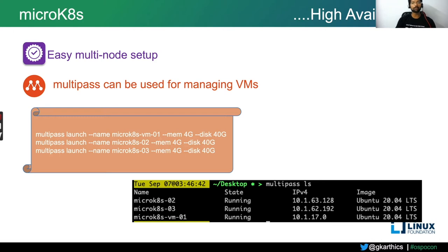How do we create a highly available MicroK8s Kubernetes cluster? For high availability, as we discussed, we need multiple machines or nodes. Since we are running on a single development machine — a laptop or desktop — we need to create multiple virtual machines. You can use any tools to manage or create virtual machines, like VirtualBox, Multipass, or Vagrant. I use Multipass here, which is another tool from Canonical folks.